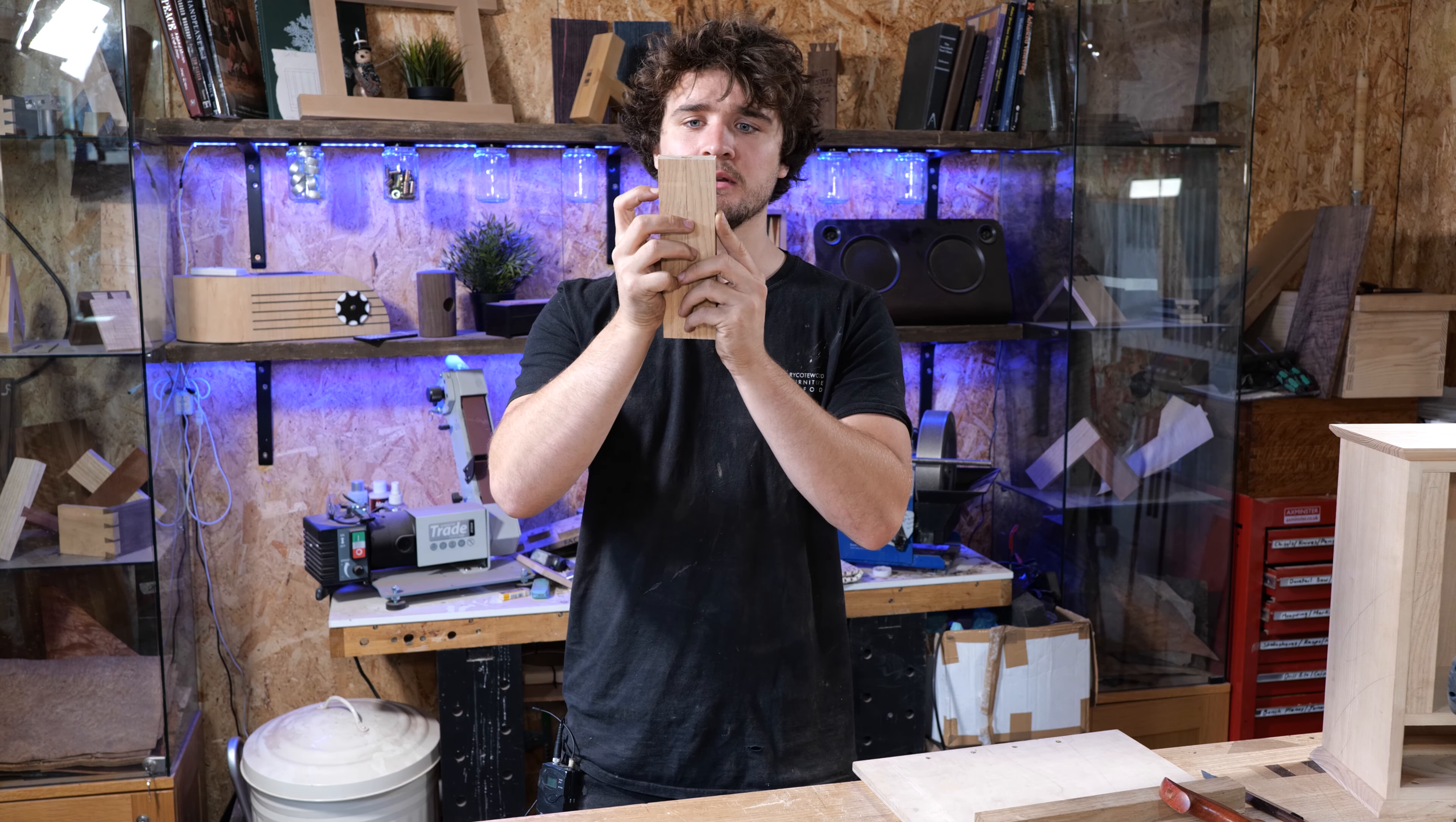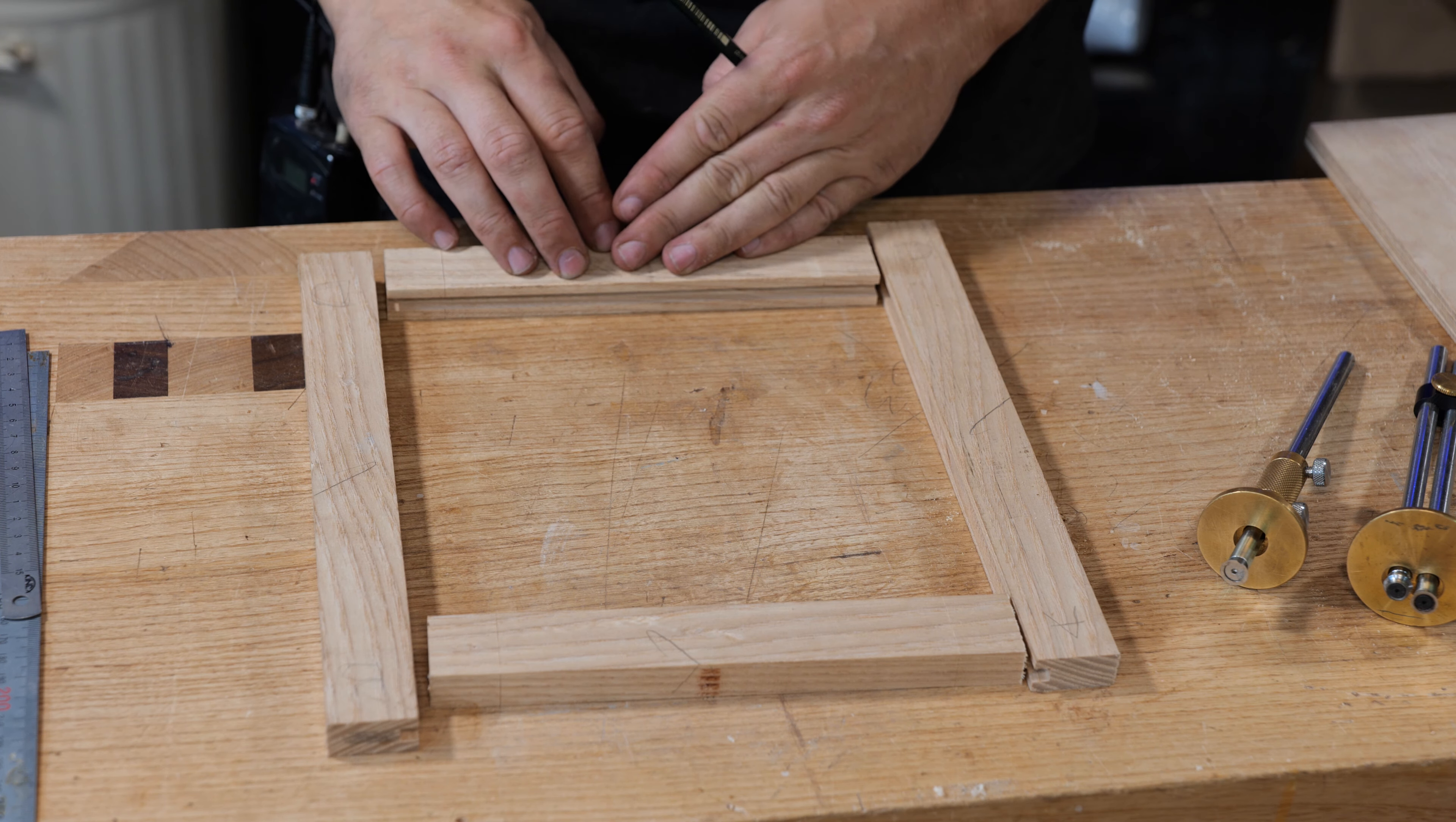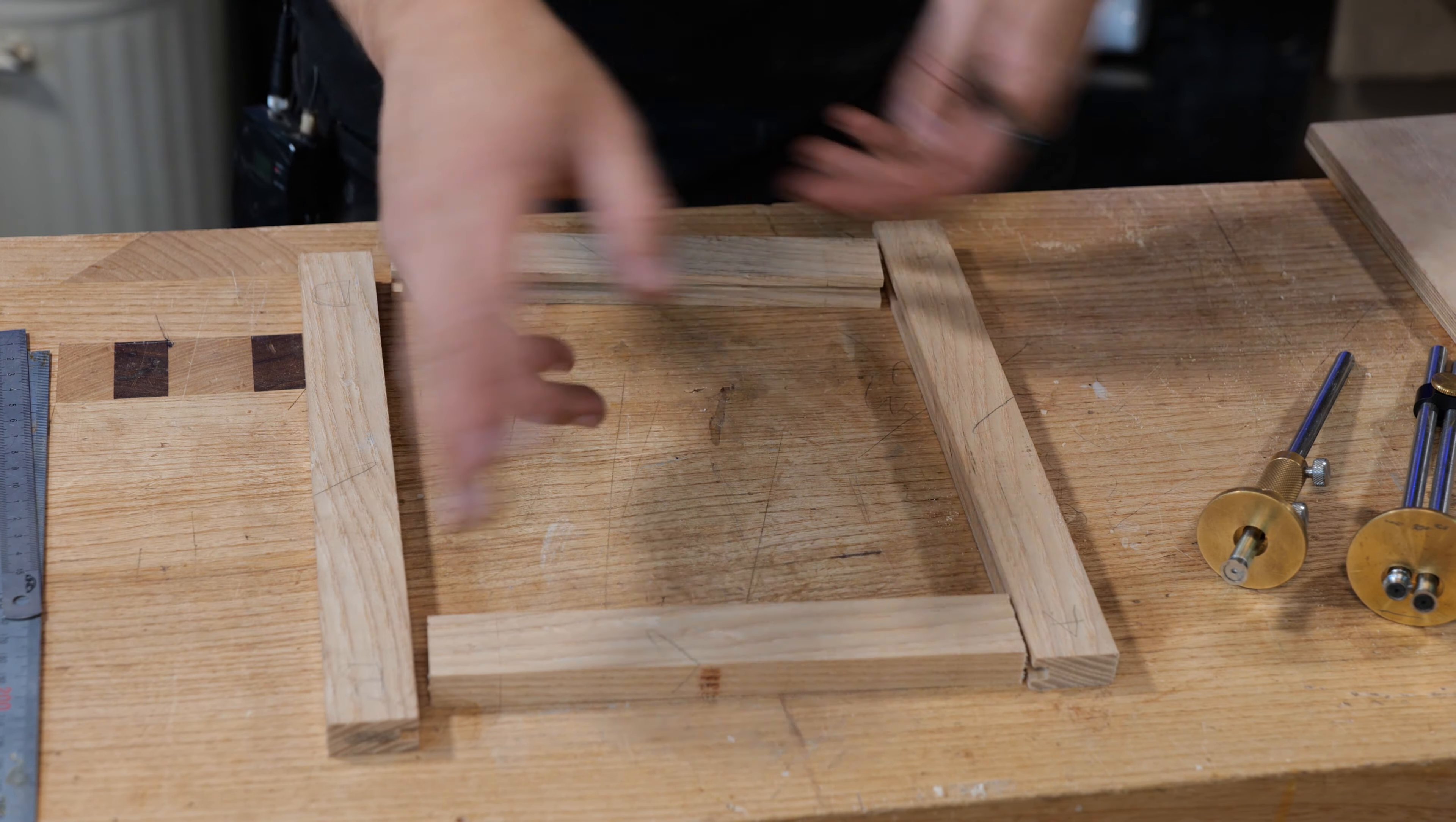This would be a good point to work out which way you want your rails to be. You haven't got a lot of choice because the face side needs to be up on these, since we've used that as our reference face when cutting the grooves by hand or using the router table. The groove needs to be on the inside, so you can only swap them around at this point.